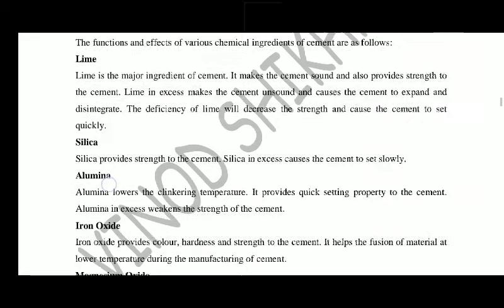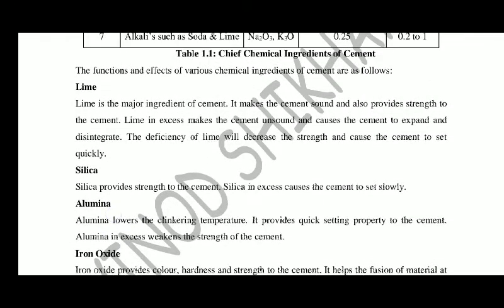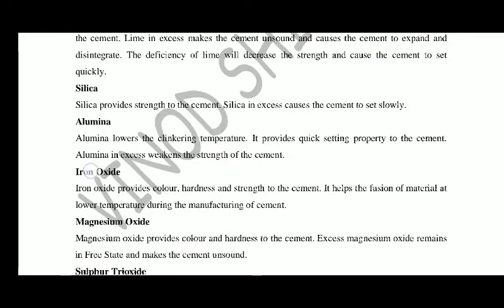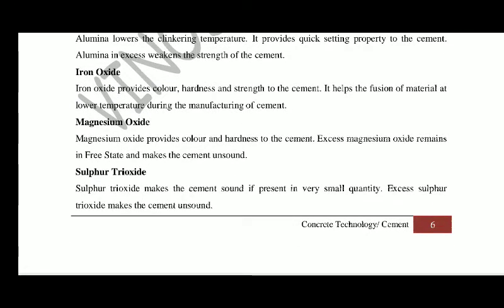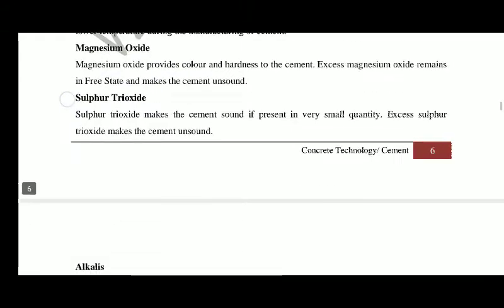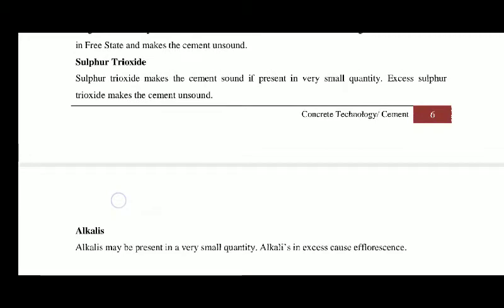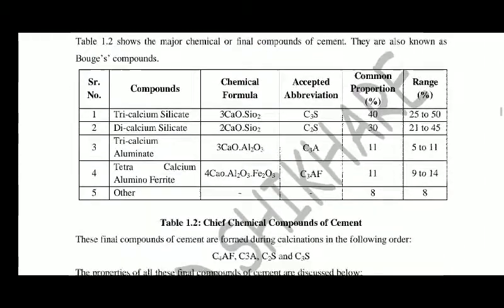The different functions of ingredients in cement: lime is the major ingredient and gives strength to the cement. Silica also provides strength. Alumina lowers the clinkering temperature and provides quick setting property to the cement. Iron oxide provides color to the cement. Magnesium oxide also gives color to the cement. Sulfur dioxide makes the cement sound if present in a very small quantity.